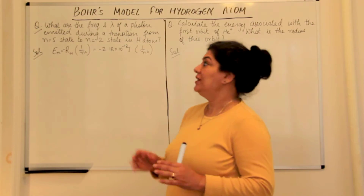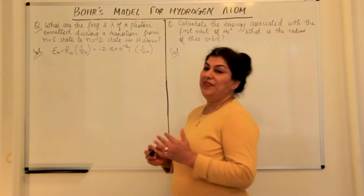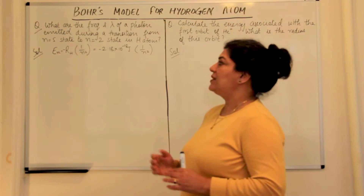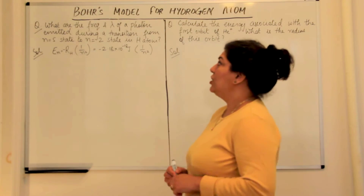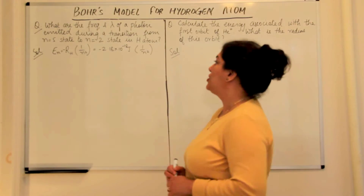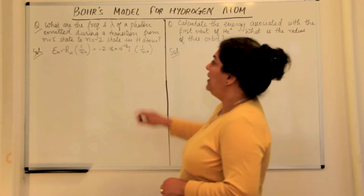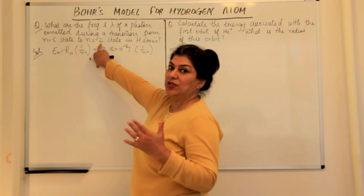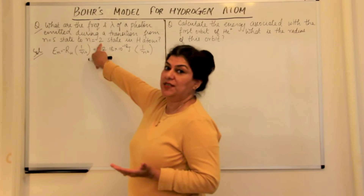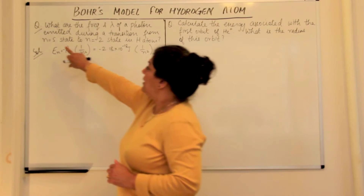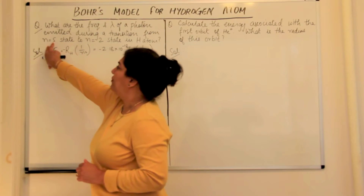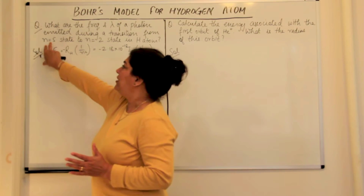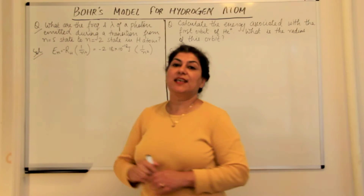The first question that I have chosen is: what are the frequency and wavelength of a photon which is emitted during the transition from n = 5 state to n = 2 state in hydrogen atom? We know that all lines that fall to the second state in the spectrum fall under the Balmer series. Here the initial state of the electron was the 5th energy level, and the electron has moved from the 5th energy level to the 2nd energy level.